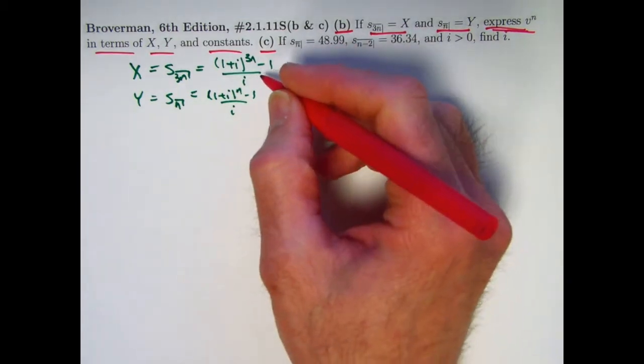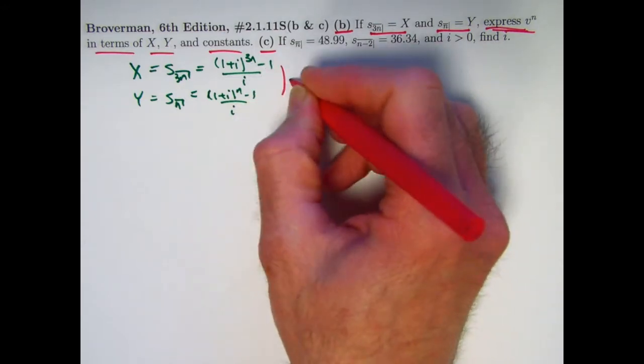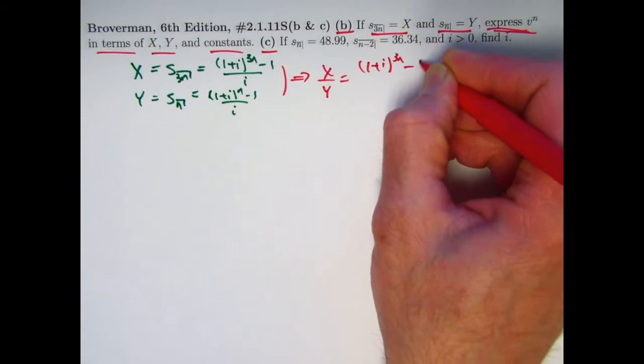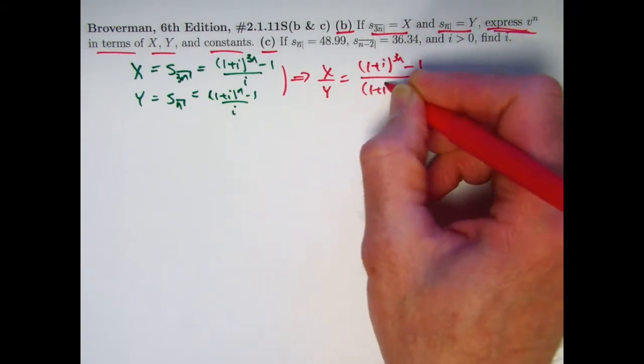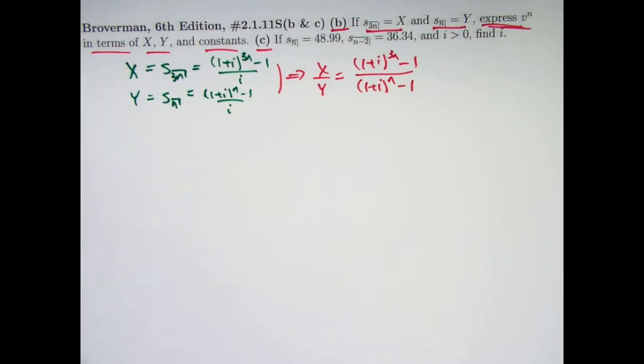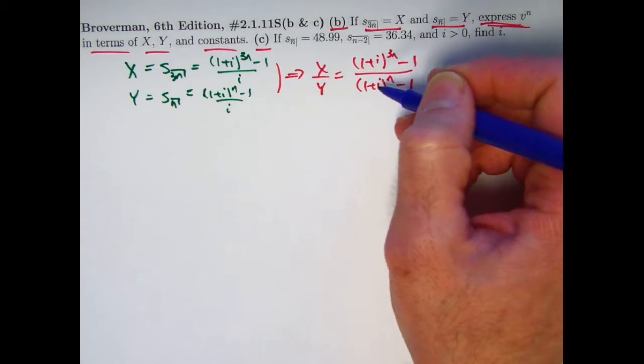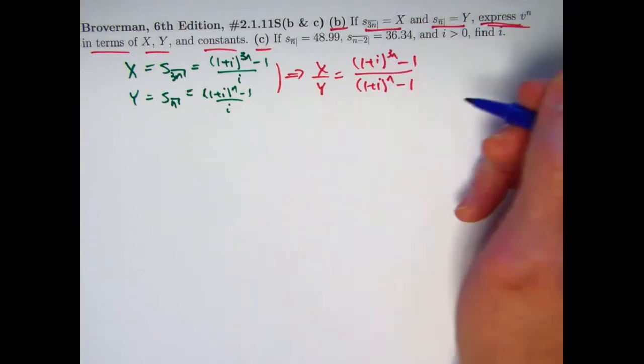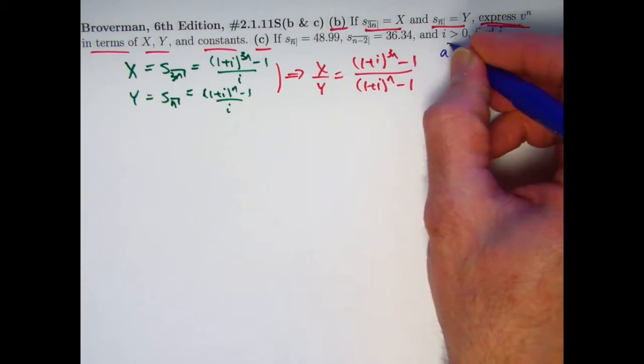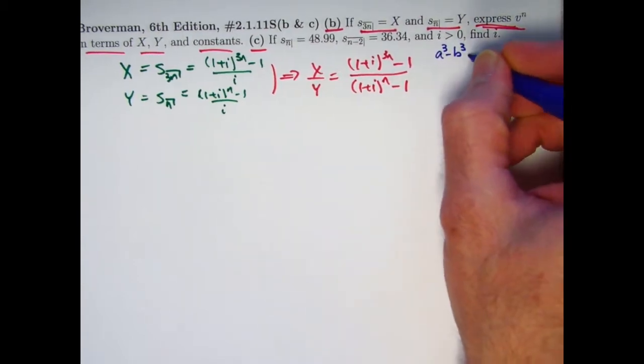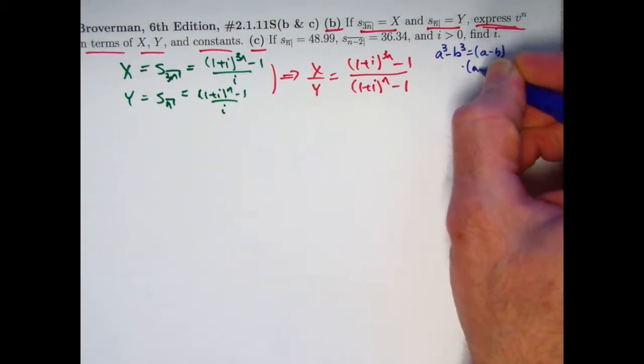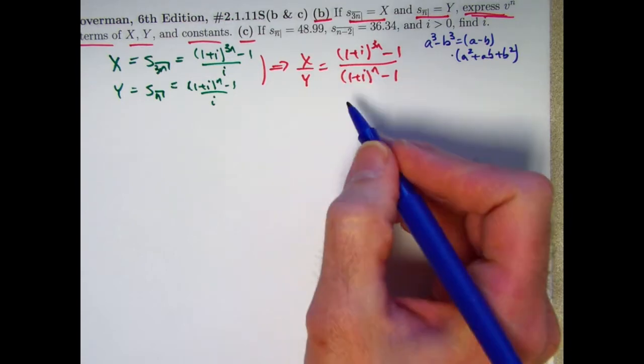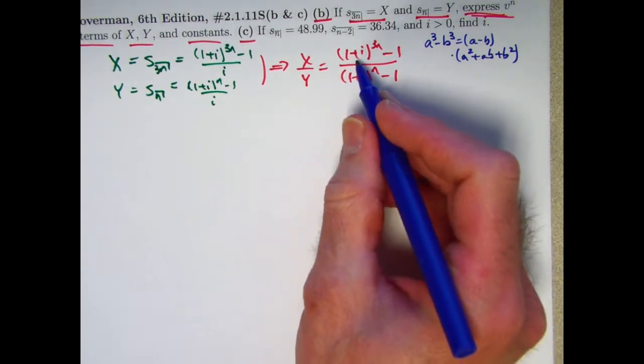So the first trick is to take, say, X divided by Y because the i's will cancel. You can write x divided by y is 1 plus i to the 3n minus 1 divided by 1 plus i to the n minus 1, the i's canceled. Here's one of the important tricks. What we have up here on top is really the difference of two cubes. In the last video, it was the difference of two squares. Here we have a difference of two cubes, 1 plus i to the n cubed minus 1 cubed. There's a formula for factoring the difference of two cubes.